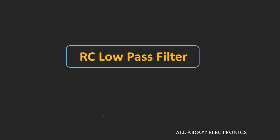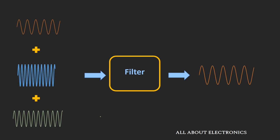Hey friends, welcome to the YouTube channel All About Electronics. In the next couple of videos, we will learn about passive electronic filters. An electronic filter is a circuit which passes some frequency components and rejects or attenuates all other frequency components. Based on the frequency band being passed, filters can be classified into four different types.